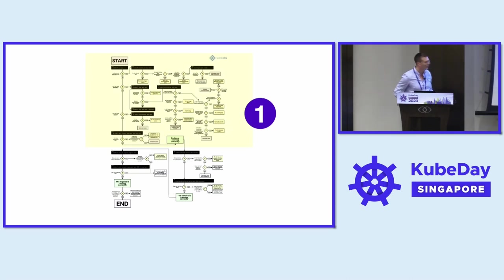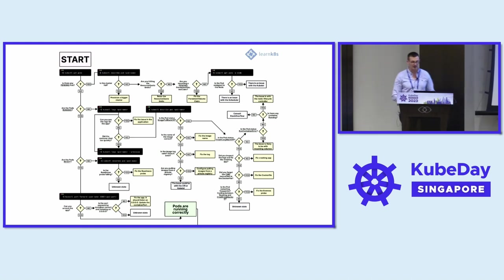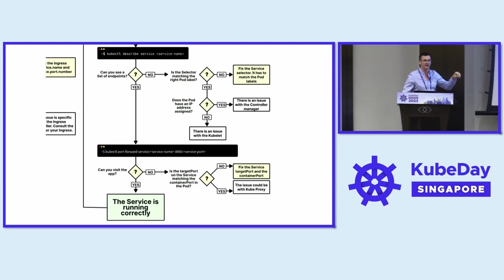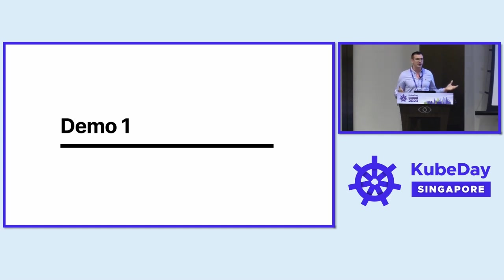This is the plan for the demos. The first part is inspecting the application to see why it's broken or isn't coming up correctly. The second part looks at why the service isn't routing traffic to the pods. The third part covers why traffic from the outside isn't getting through at all. The best way to do this is to break something and fix it.